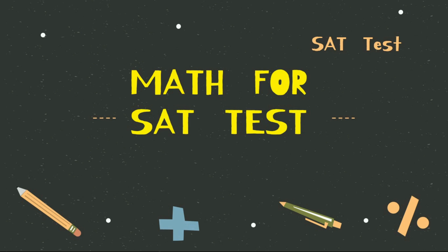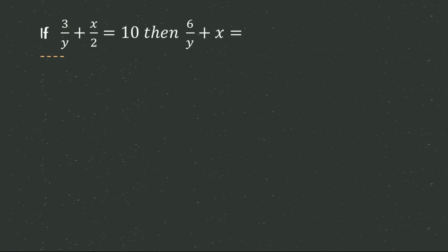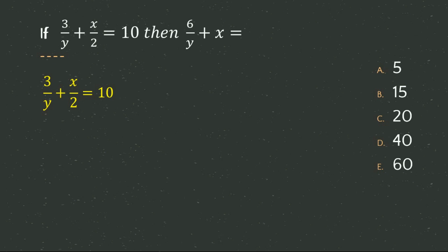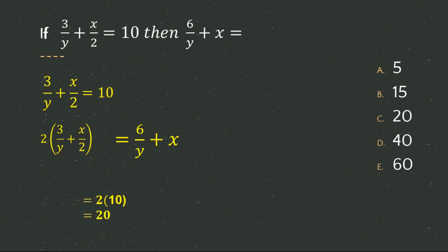The first question from the SAT practice paper is: if 3/y + x/2 = 10, then 6/y + x equals what? From the given equation, we need to make the left side equal to 6/y + x. If we multiply both sides by 2, we get 6/y + x = 20. So the C option is the correct answer.